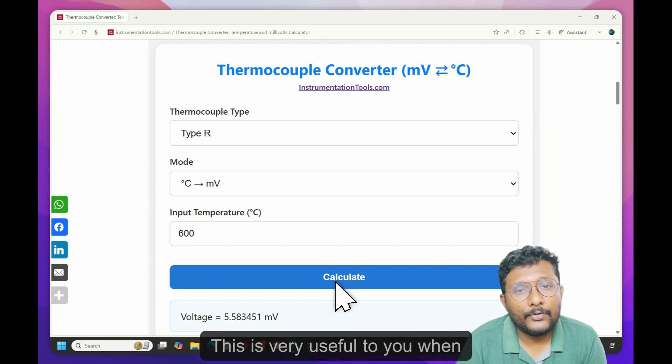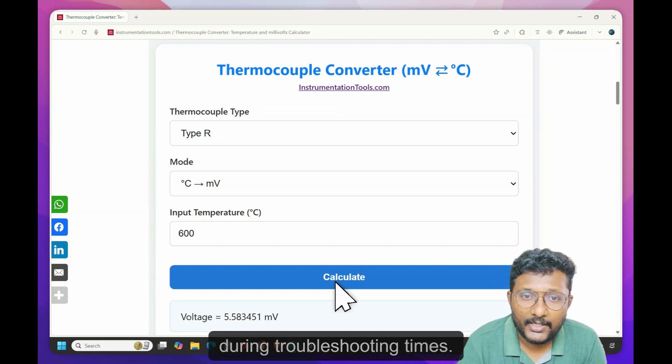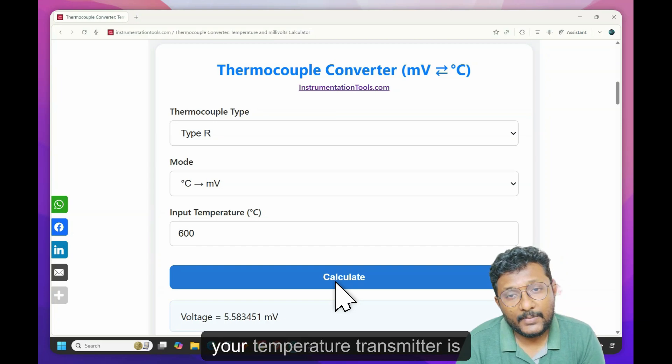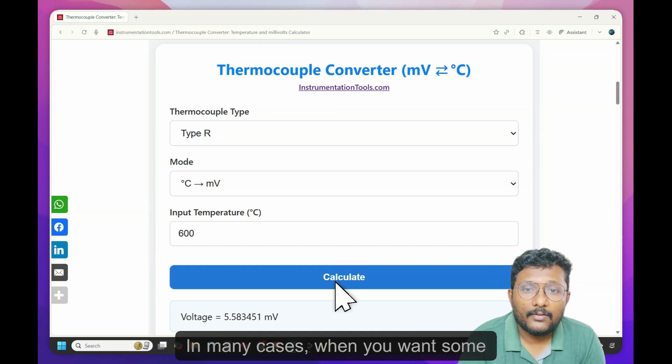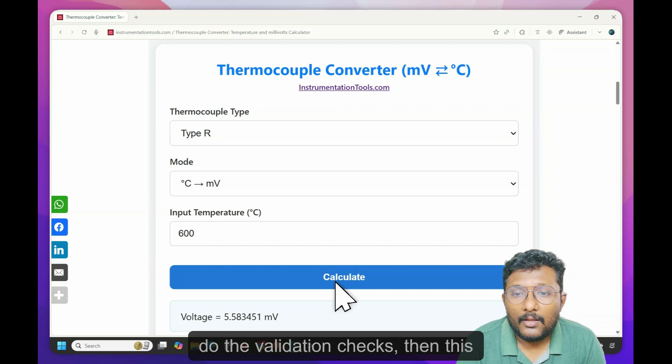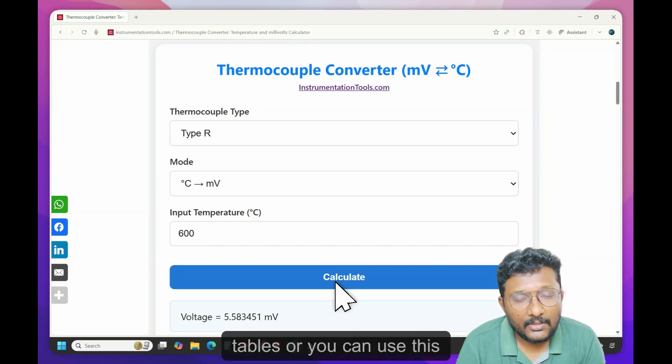This is very useful to you when you are doing some calculations or during troubleshooting times. You want to verify that your thermocouple is working fine or your transmitter, temperature transmitter is showing current reading. In many cases, when you want some cross verification or you want to do the validation checks, then this converter is useful. You can also use thermocouple tables or you can use this converter.